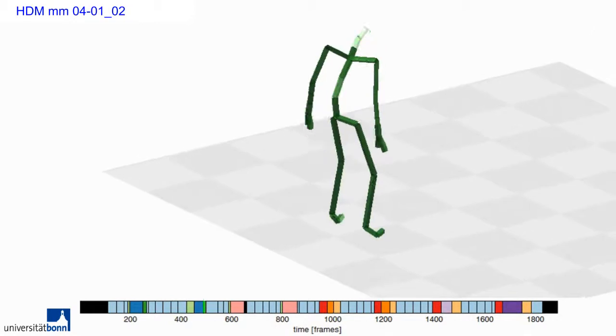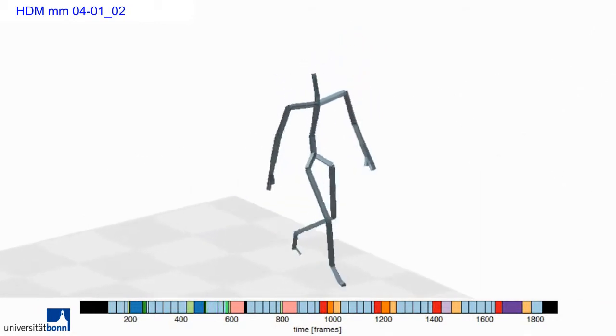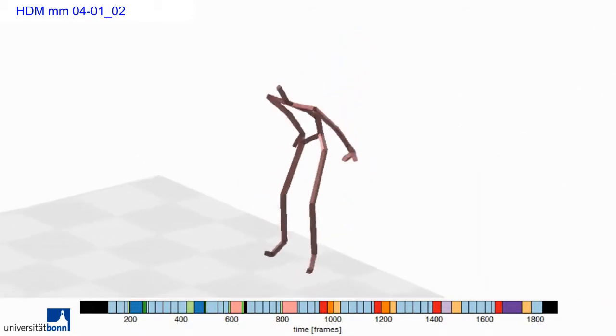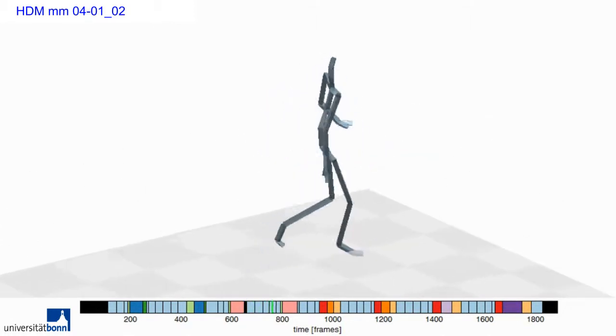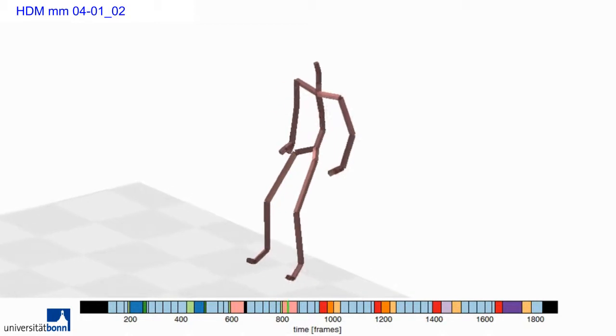Situations when the subject sits or lies down all occur at least twice. The fact that he sits down and gets up in a similar fashion every time is reflected by the color codes indicating the clustering.